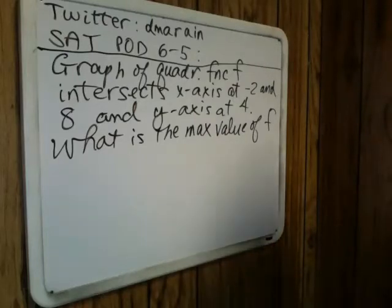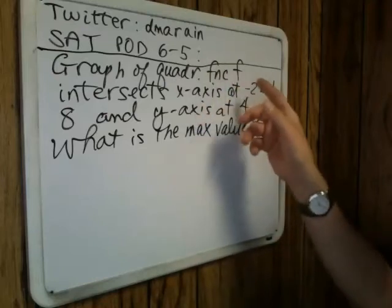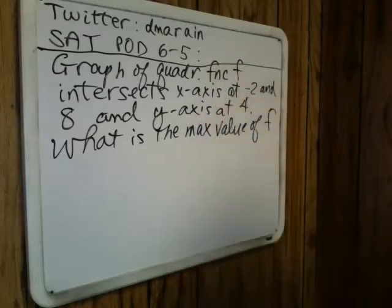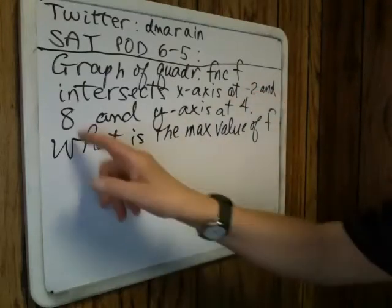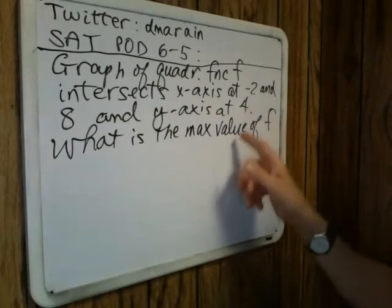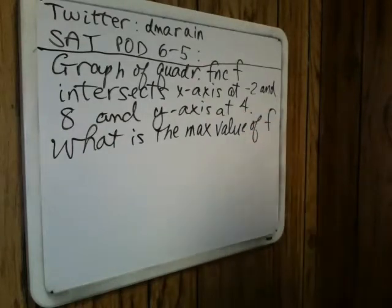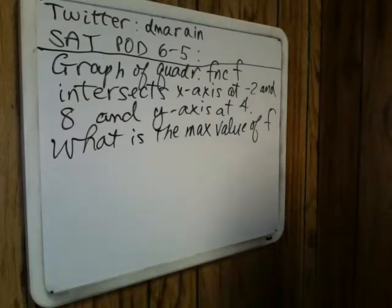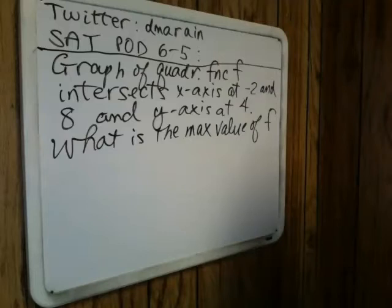Yesterday's problem that I tweeted is: the graph of a quadratic function intersects the x-axis at negative 2 and 8, and it has a y-intercept of 4. What is the maximum value of f? This is a more advanced Algebra 2 question. The SAT now includes Algebra 2 questions, but this is on the border between SAT and Math 1C.